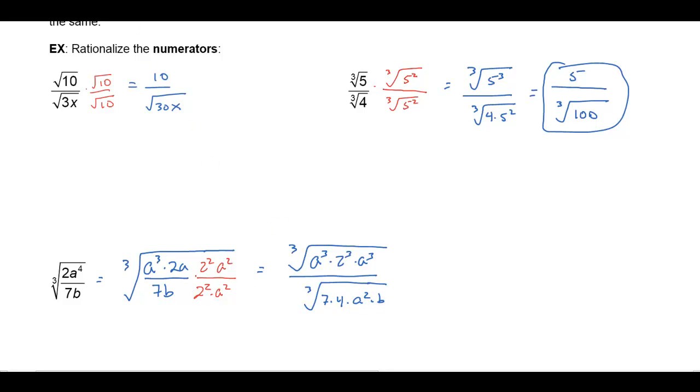Now you can see there's no perfect cubes here in the denominator. Here I'm going to get the 2, the cube root of 2 cubed is 2, and then I'll have an a here and another a here, that'll make a squared. And the cube root in the denominator of 28a squared b.